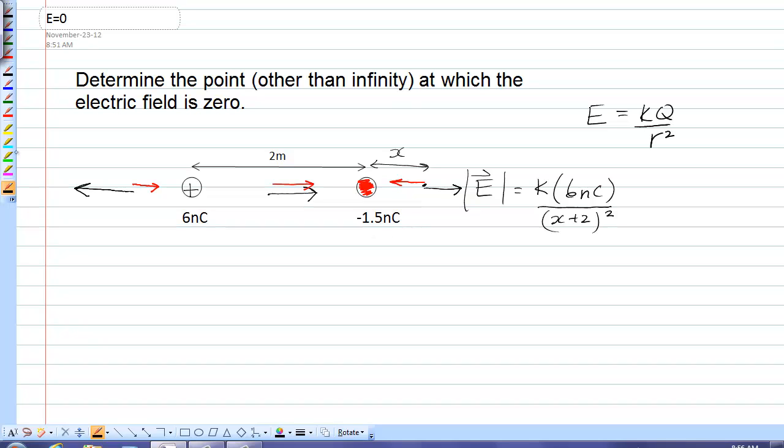Now the red vector, the magnitude of it would be k times positive 1.5, because it's only magnitudes here, and the distance from the red one is x squared.